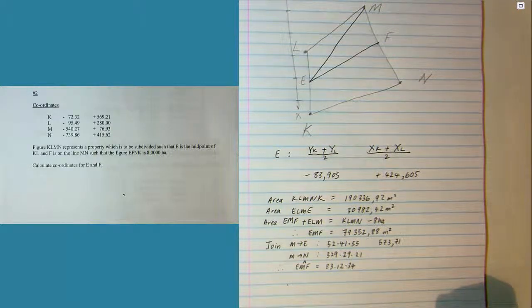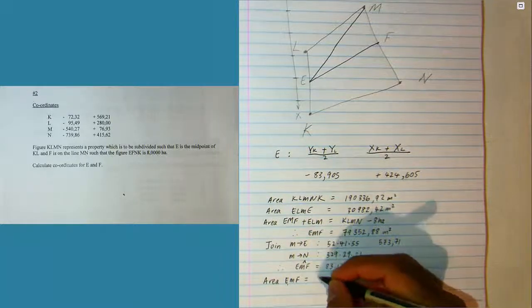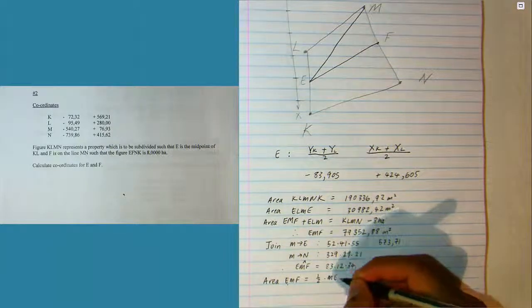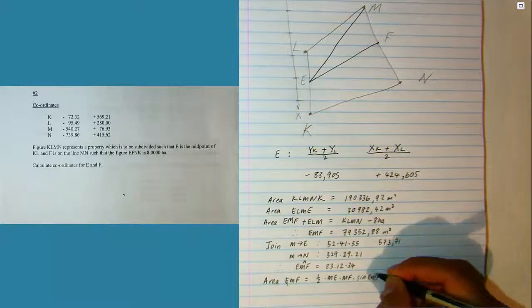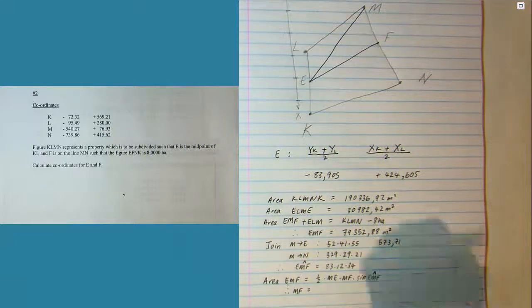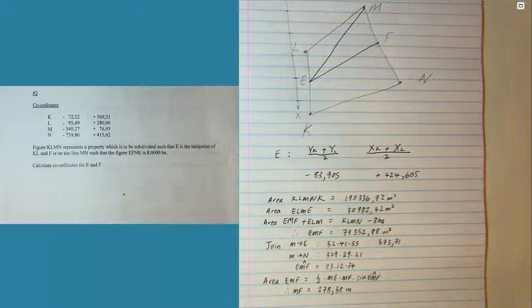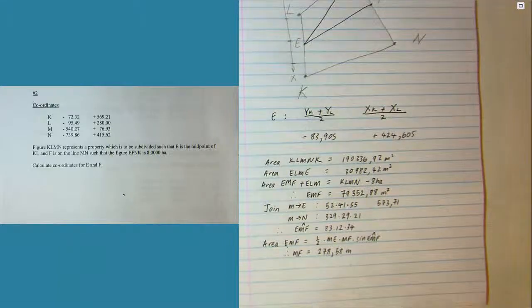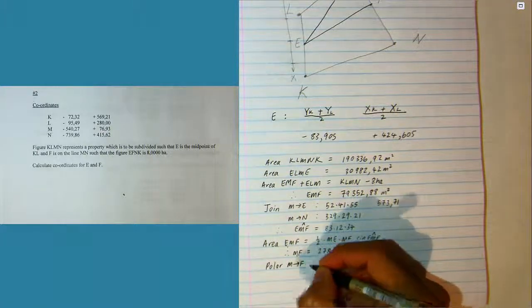The equation for the area of the triangle EMF is half ME times MF times sine of angle EMF. So we can solve for MF and then we can polar from M to F because we have the distance and direction.